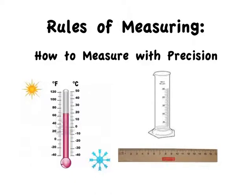Hey chem students, Ms. Schwemann here again. Today we're going to learn about rules of measuring. Specifically, we're going to talk about how to measure with precision while using different tools that we'll commonly utilize in chemistry lab this year, such as our thermometer, graduated cylinder, and ruler.